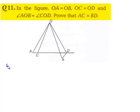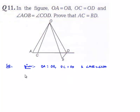Now moving on to the solution. Given that OA is equal to OB and OC is equal to OD, and also angle AOB is equal to angle COD, we are asked to prove that AC is equal to BD.